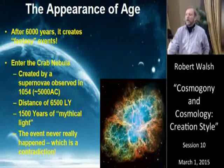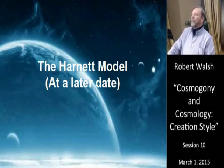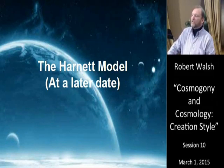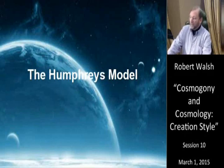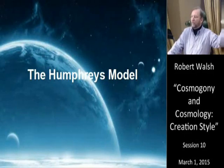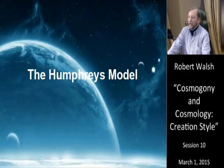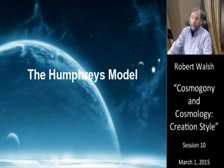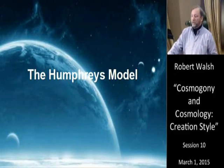Among modern models, John Harnett from Australia based his cosmology on the work of Carmeli, but we won't look at that tonight. It's still an interesting model, though it's not catching on for various reasons. What we want to focus on for the remaining time is the Humphreys model, published by Russ Humphreys in his book Starlight and Time in 1994. We're going to look at it in detail because it has become very popular and a lot of literature has been dedicated to it.